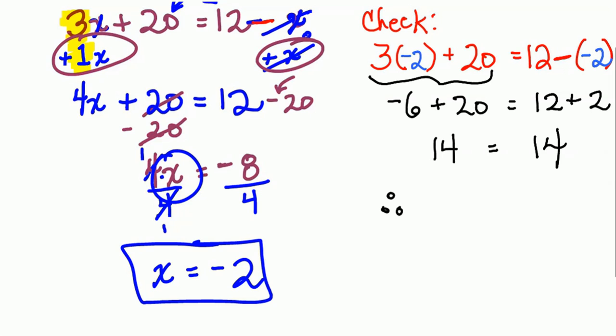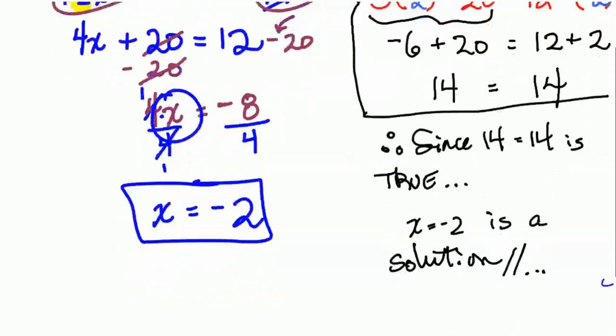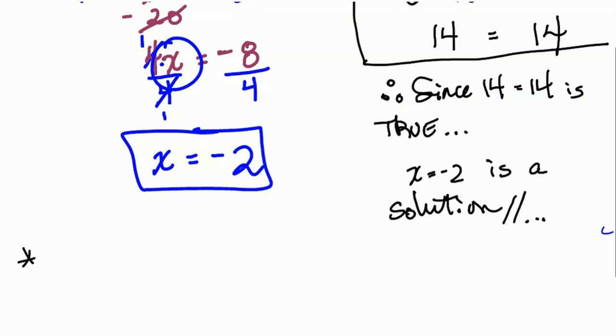Since we get a true statement, since 14 is equal to 14 is true, then x is equal to negative 2 is a good solution, it's a valid solution. Good job, you guys. I hope that you're practicing and doing well. Make sure you get in touch with me if you have any questions about any of this. Now you know how to check your solutions. Essentially, now you have verification for your answer to any linear equation, actually any equation that we solve this semester. Now you know how to check, it's like you have your own key.